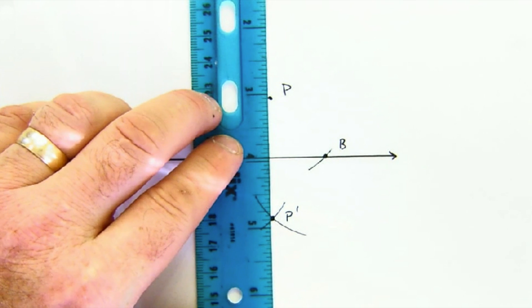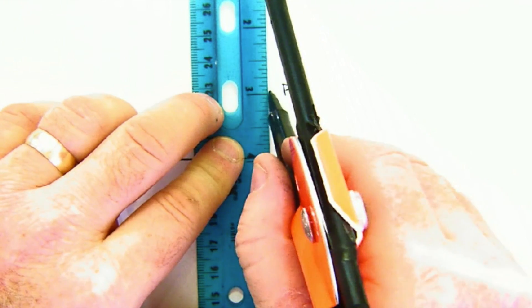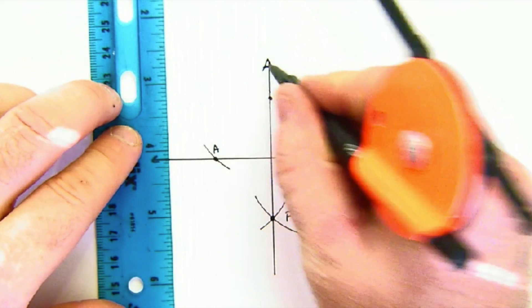When you connect those two, P and P prime, you get a perpendicular line.